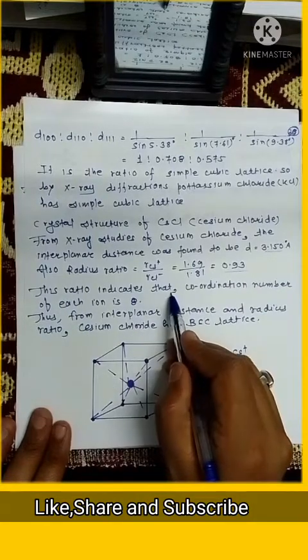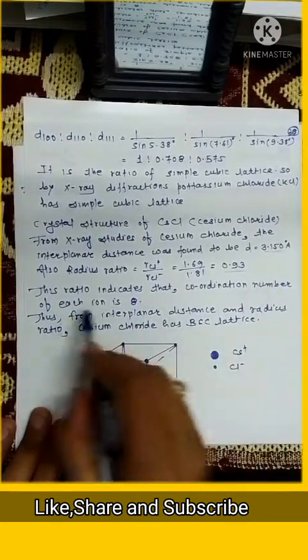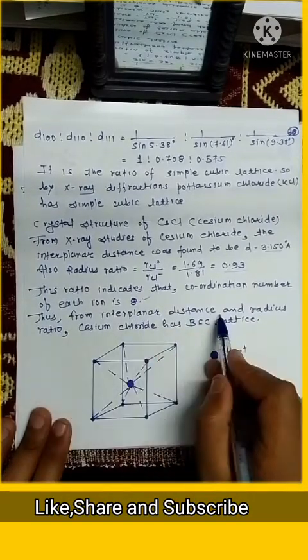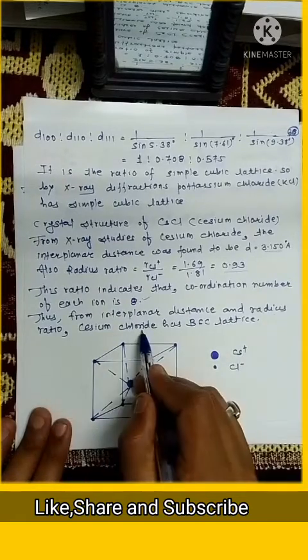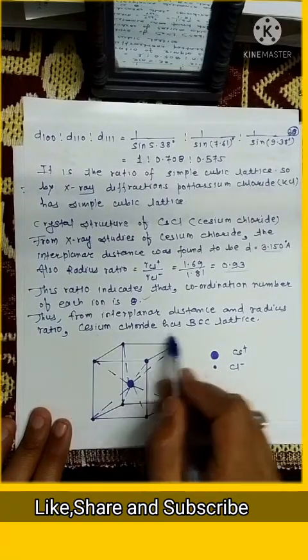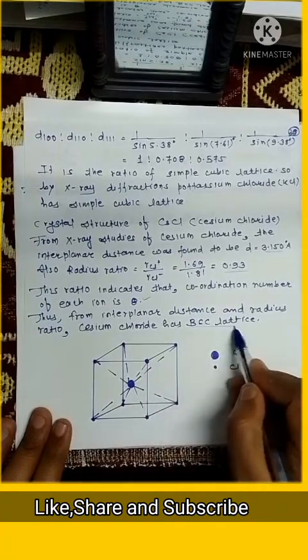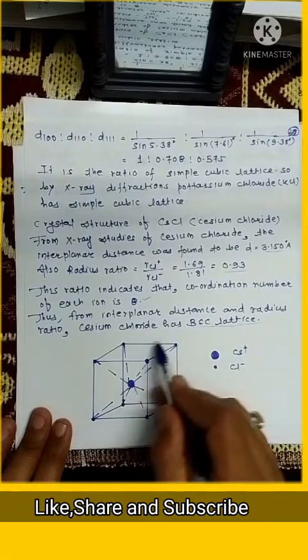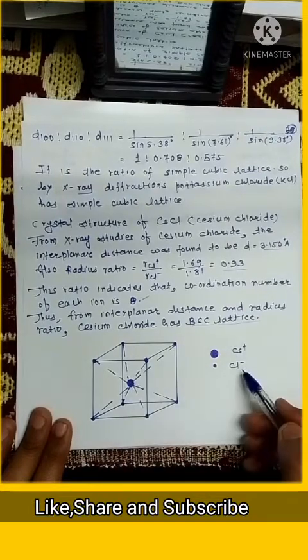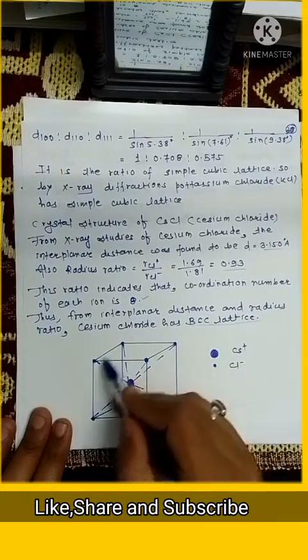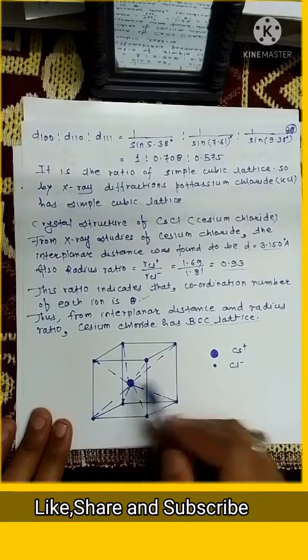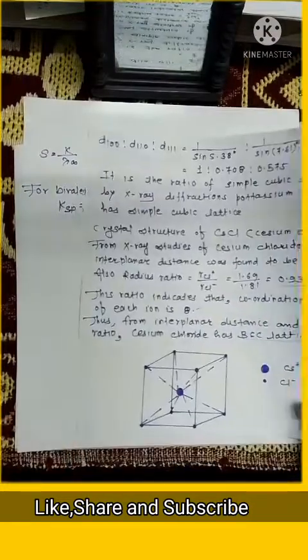This ratio indicates that coordination number of each ion is 8. So thus from interplanar distance and radius ratio, we can say CsCl, cesium chloride has body centered cubic lattice structure which is like this. This is your cesium atom and all 8 chlorine atoms are present at the 8 corners of the cube while cesium atom is present inside the cube. Thank you very much.